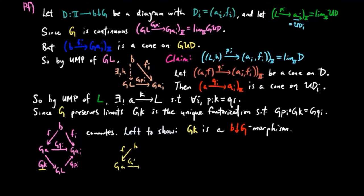In other words, that GKF is equal to H. By the universal mapping property of GL, since GPI GK is equal to FI, which is also equal to GPI H for each I,